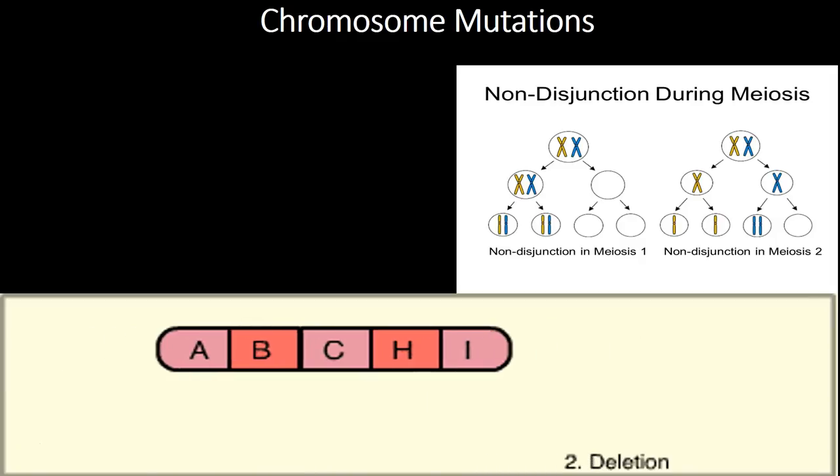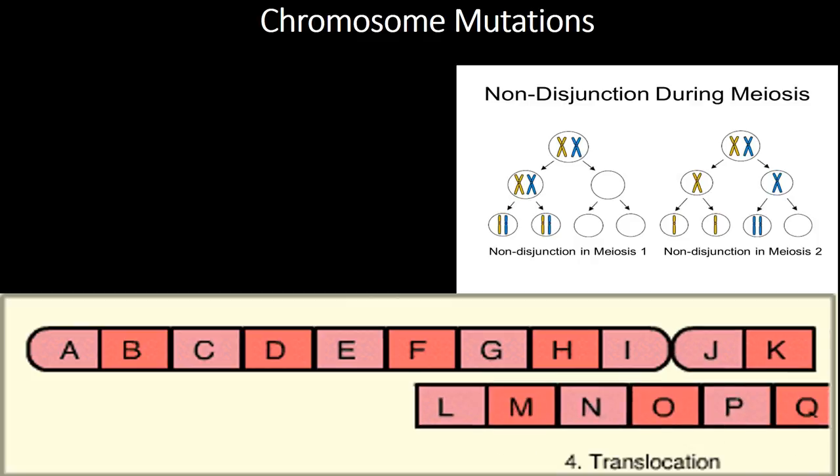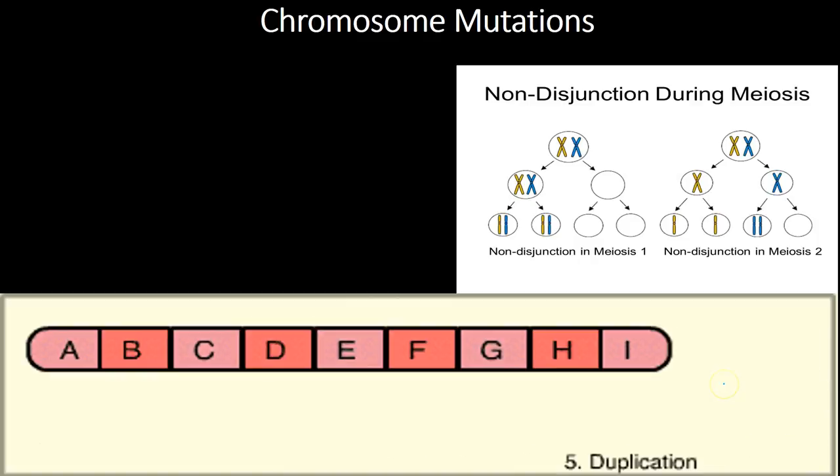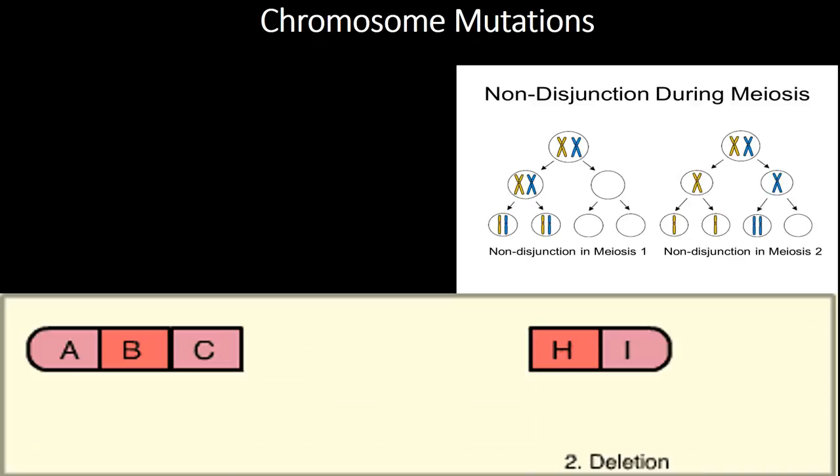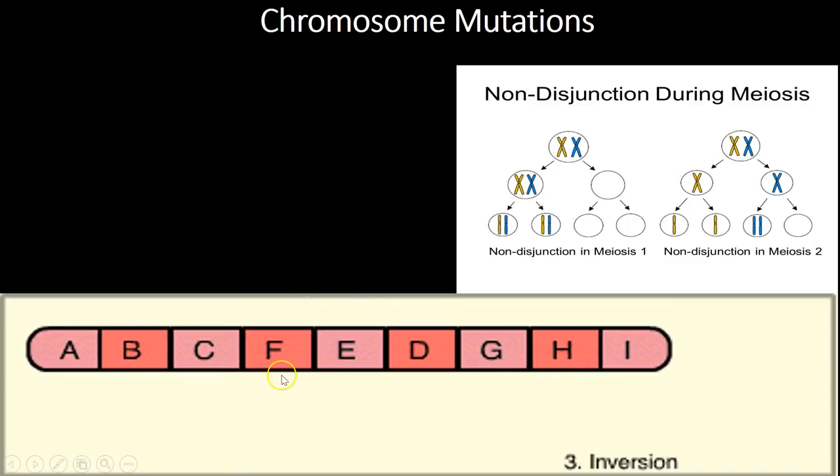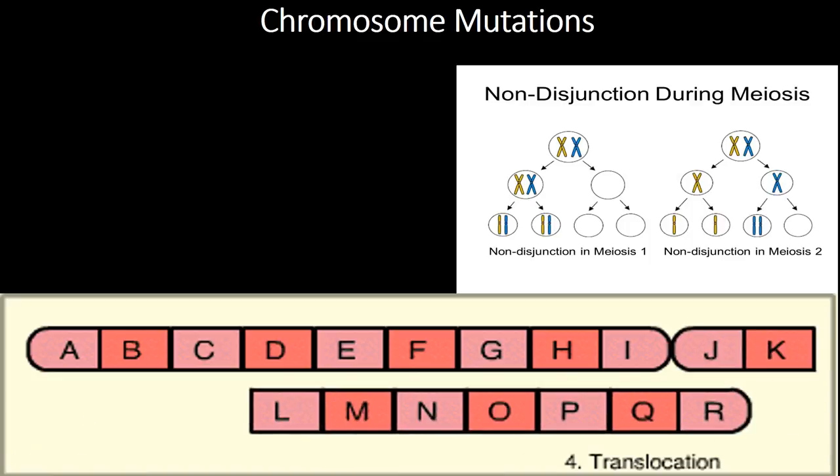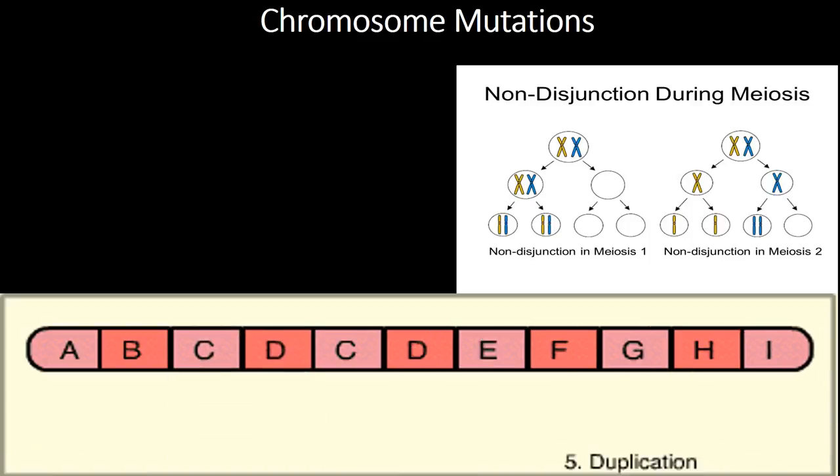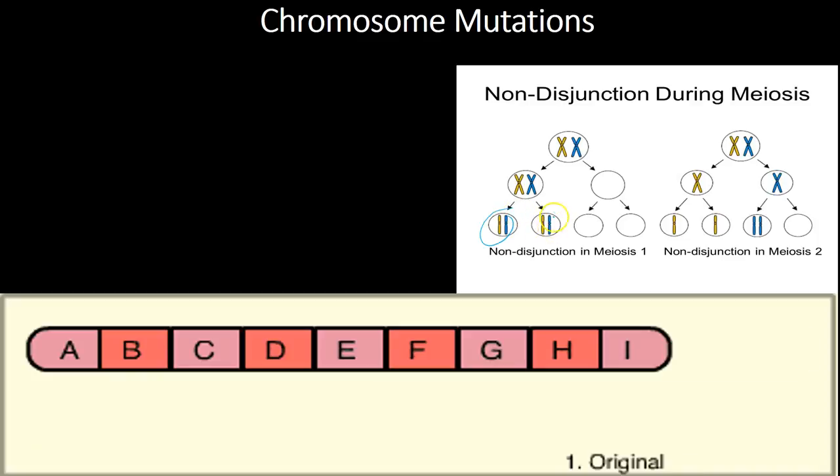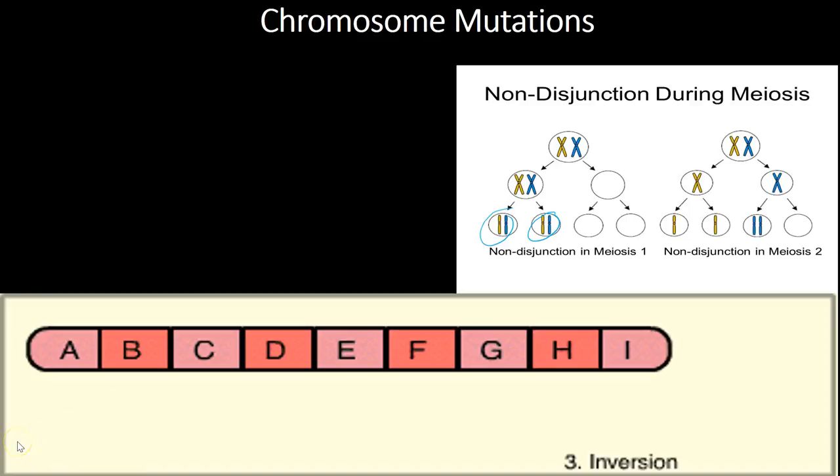So if we were to look at this in recap, this little animation right here, we have inversion, we have a segment flip around. Translocation, this would be from another chromosome. Duplication, a segment is repeated. Deletion, a segment is taken away. And then of course, non-disjunction. Non-disjunction is referring to meiosis when gametes form with abnormal number of chromosomes. That was chromosomal mutations, and I will catch you guys next time.